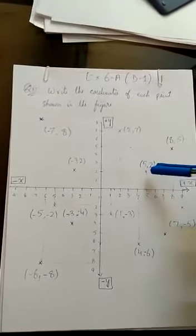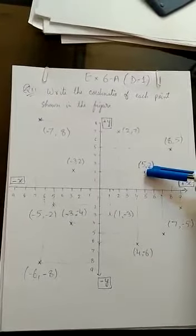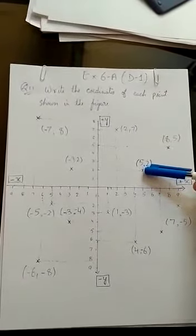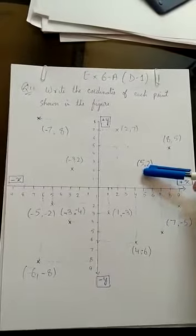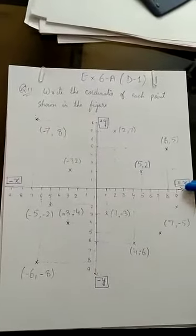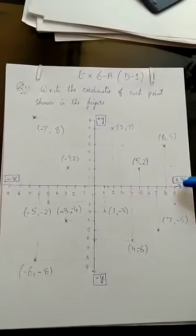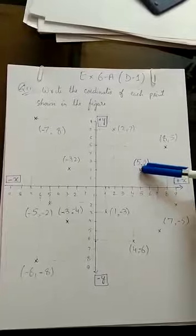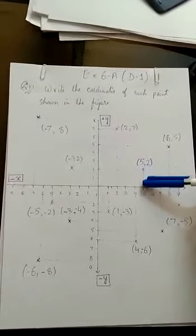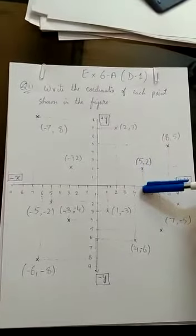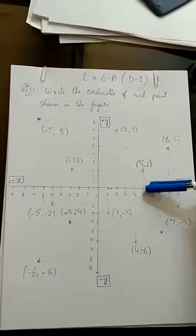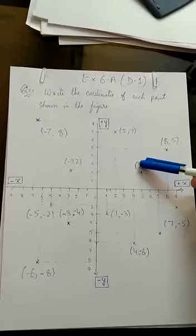To find the coordinates, we stand at the point. Since we need to find X first, we move horizontally toward the X-axis. The value at which we arrive is our X value. For example, standing at this point and moving toward the X-axis, I reach 5 — so the value of X is 5.